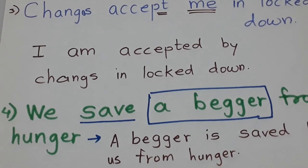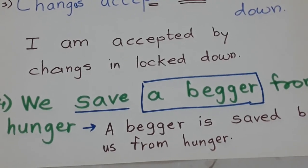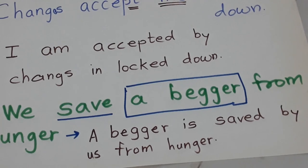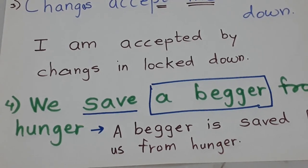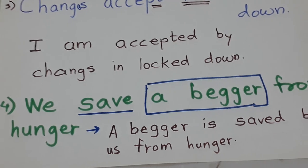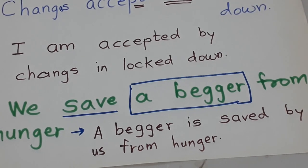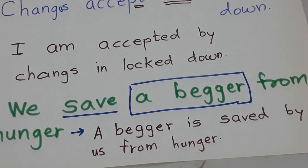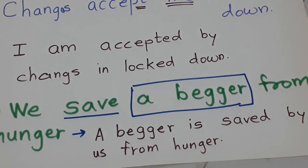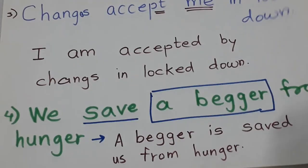Now at the start: We save a beggar from hunger. Save is in present. A beggar. A beggar is saved by us from hunger. A beggar is saved by us. We changes to us. This is the conversion.